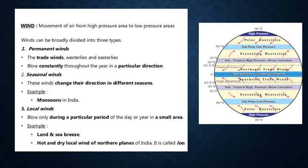Seasonal winds change their direction in different seasons. For example, monsoons in India. Local winds blow only during a particular period of the day or year in a small area. Examples include land and sea breeze. A hot and dry local wind of the northern plains of India is called Loo.